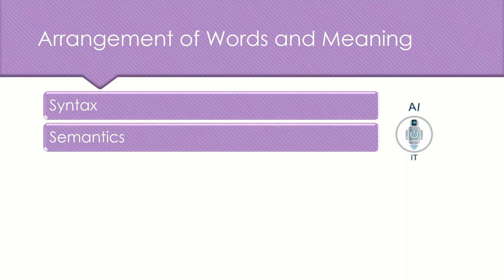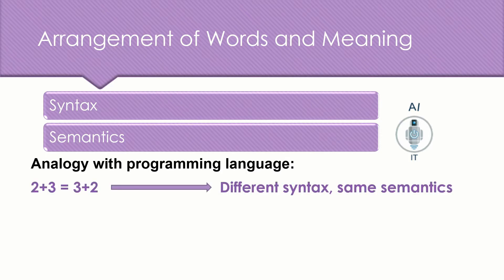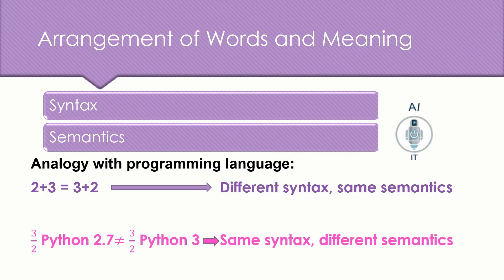There's something called semantics, which is the meaning of the word. What is the meaning of the sentence? If you look into the analogy with programming language, if you take 2 plus 3, it is same as 3 plus 2. Even though this has different syntax, it has the same meaning. If you take the same syntax, for example, in Python version 2.7, if you divide the number 3 by 2, what we get is 1. But the same problem in Python version 3 is going to result with an output of 1.5. So what we understand is that even though we have the same syntax, it carries different meanings.